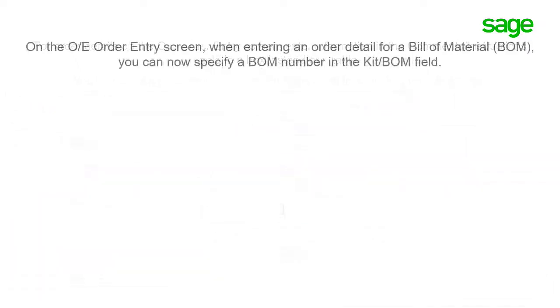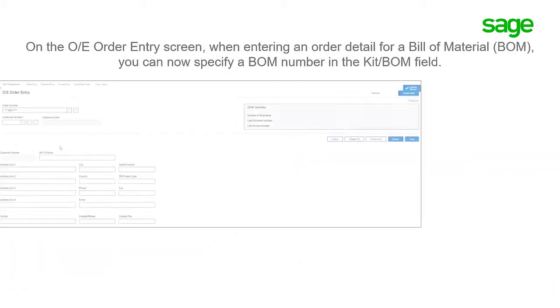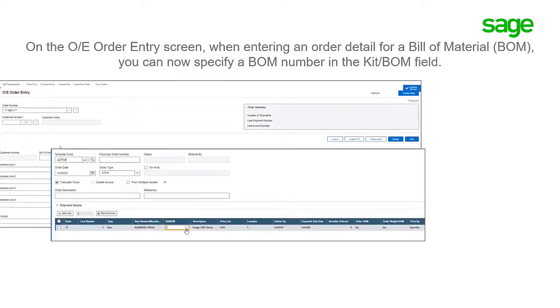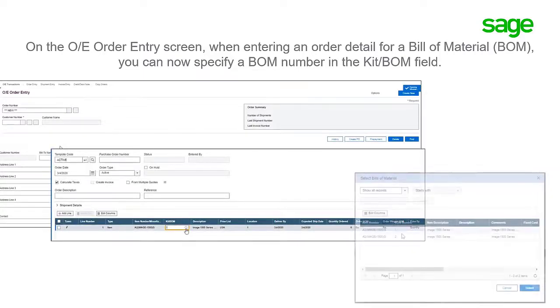On the OE order entry screen, when entering an order detail for a bill of materials (BOM), you can now specify a BOM number in the KIT BOM field.